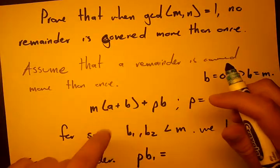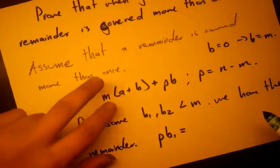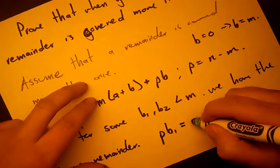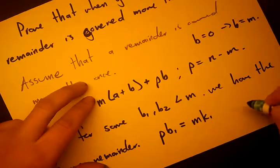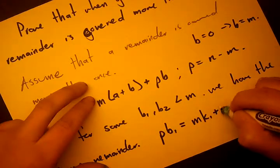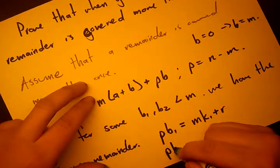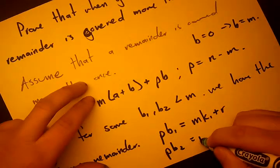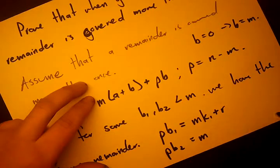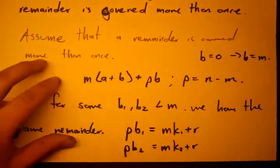We prove that P times B1 equals M times some K1, M times some K1 plus the remainder. And P times some B2 equals M times some K2 plus the remainder.